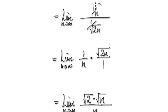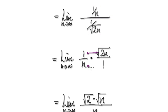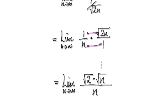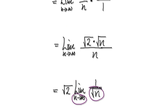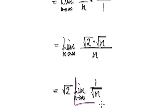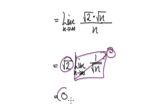Now you've got one thing divided by another thing, so you can multiply by the reciprocal — top times top, bottom times bottom — that gives you this. This is a constant, so you can take it out. As n tends to infinity, the denominator keeps getting bigger, so one divided by something very big goes to zero. Zero times root 2 is zero. So the limit is zero.